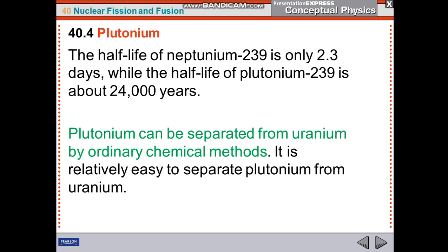The half-life of Np-239 is only 2.3 days, while the half-life of Pu-239 is about 24,000 years. Plutonium can be separated from uranium by ordinary chemical methods.